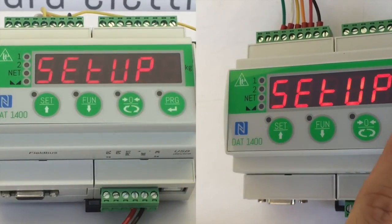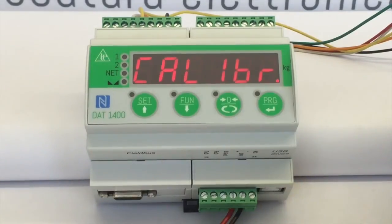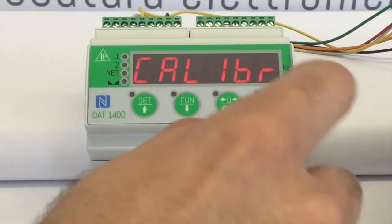Press PRG to open the calibration menu. Pressing PRG again will open the submenus.